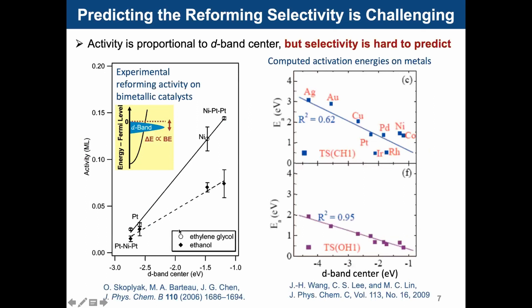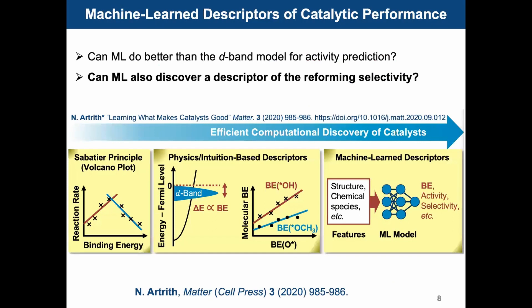Predicting the reforming selectivities is difficult. The activities of transition metal catalysts for ethanol reforming can be predicted using, for example, density functional theory simulations. The D-band center is an electronic property of the catalyst atoms and can be calculated from DFT. This relationship is not perfect, and there is no such relationship known for predicting the selectivity. So conventional descriptors are not very successful to predict the ethanol reforming selectivities.